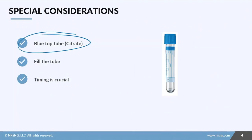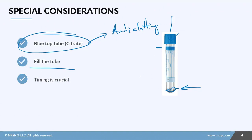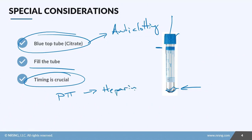All coagulation studies are sent in a blue top tube, which contains citrate as an anti-clotting additive. It's important to fill the tube all the way to the marked line so the citrate ratio isn't altered. For patients on heparin therapy, you'll redraw the PTT at specific intervals to make sure they're not receiving too much heparin. Follow your lab orders, provider orders, and facility policy, as these labs are time-sensitive.